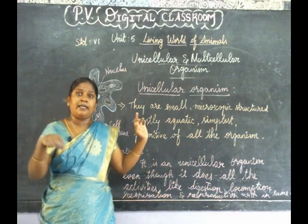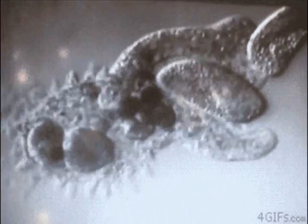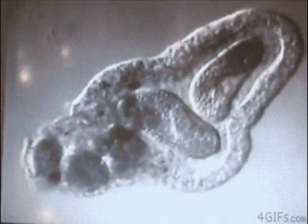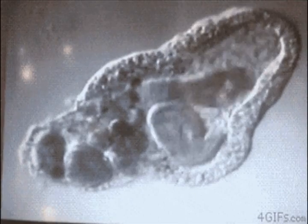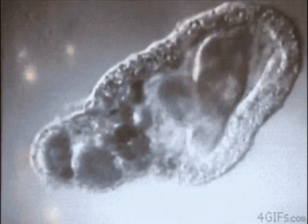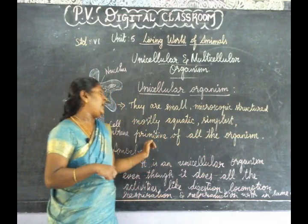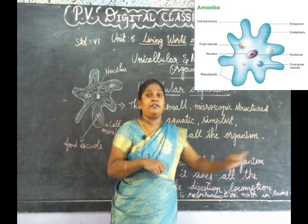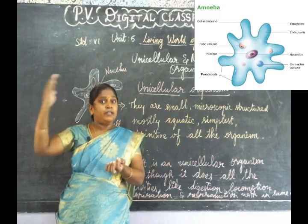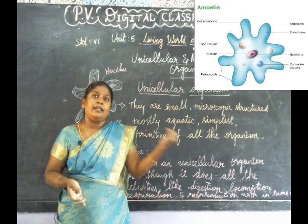How can we see unicellular organisms? By the help of a microscope. Microscopic structures are present in our world. Most of them are aquatic structures — these are aquatic structures. They are very primitive.